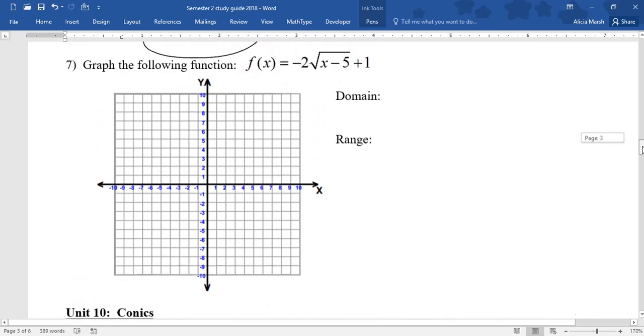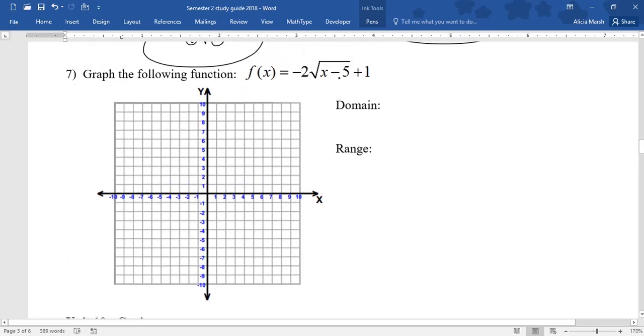And then, number 7 was graphing. Notice this is a square root. So, I need to start thinking, oh, parent table for square root. What was it? Well, we need to think, what are the perfect squares that I could plug in? Well, I can't plug in negatives into this, because that would be an i. I plug 0 in, because the square root of 0 is 0. Square root of 1 is 1. Square root of 4 is 2. Square root of 9 is 3. So, notice how I kind of built it that way.